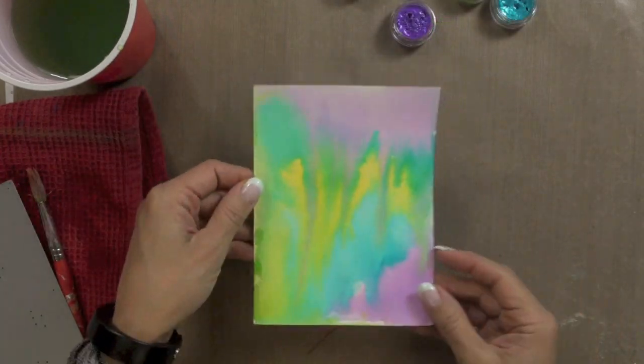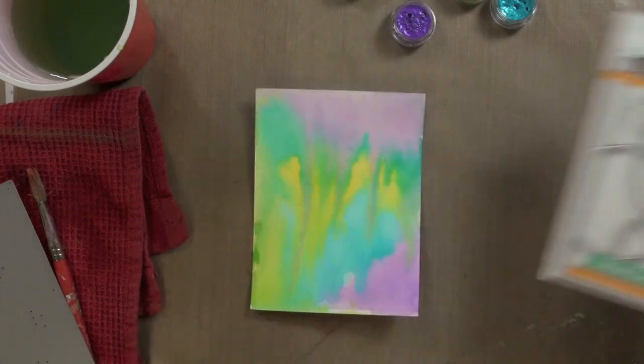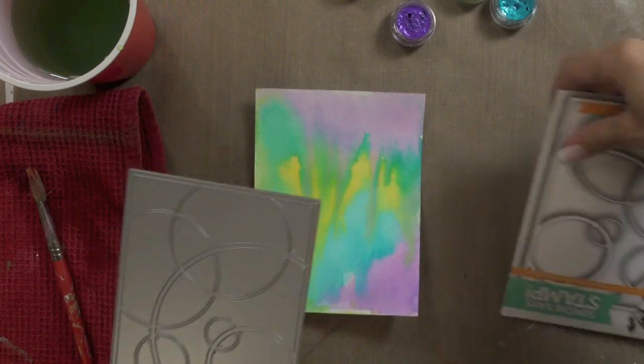Now I used my heat tool to speed up the drying process making sure that I heated my paper on both sides to try to minimize the warping.